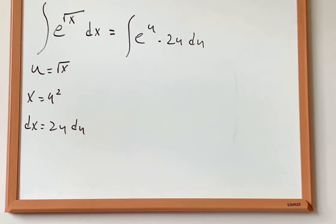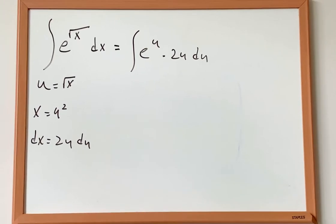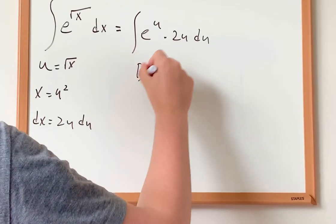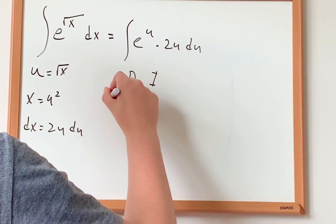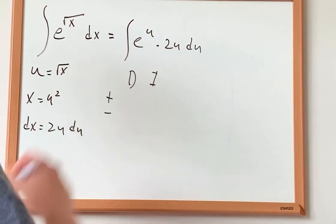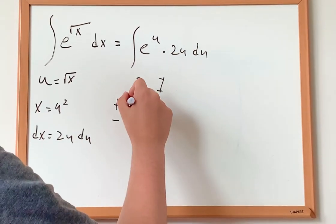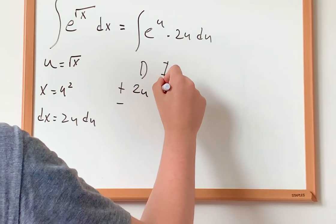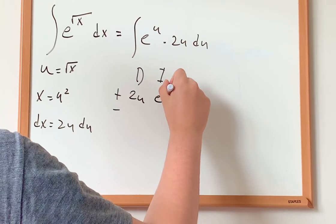And now for the next part, I want to use integration by parts, namely known as the DI method. So under D, I want to differentiate 2u and there I want to integrate e to the power of u.